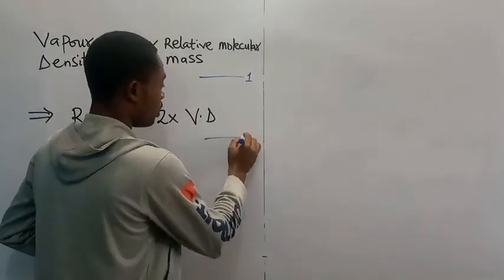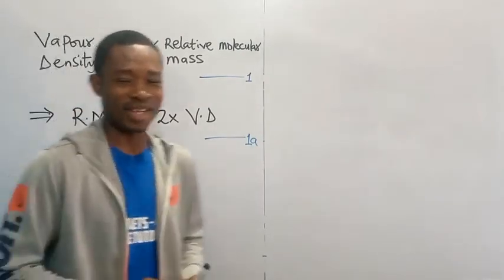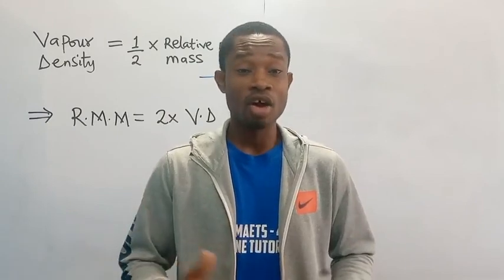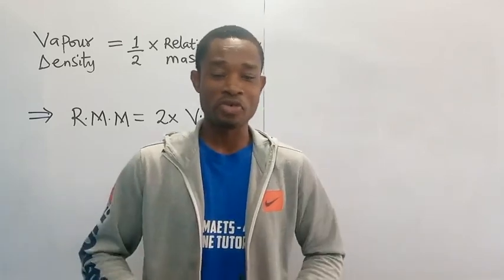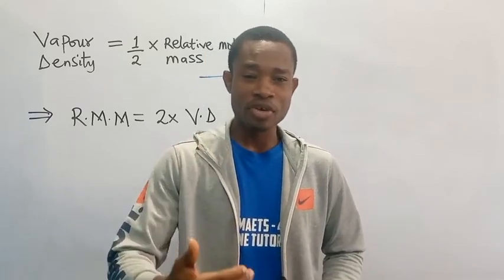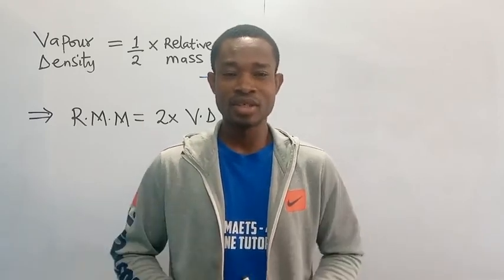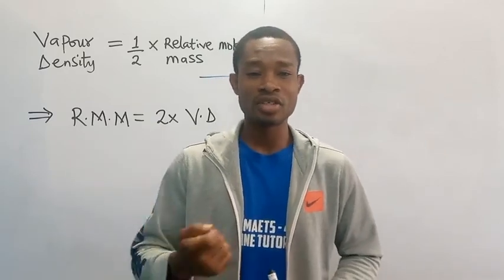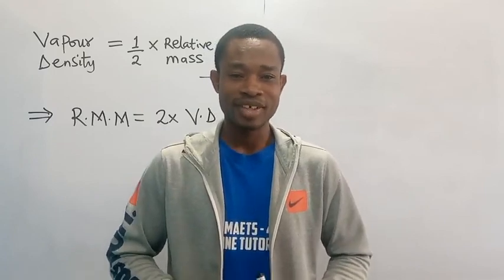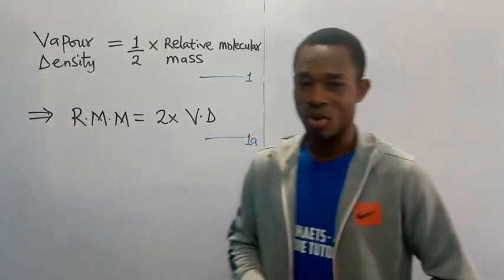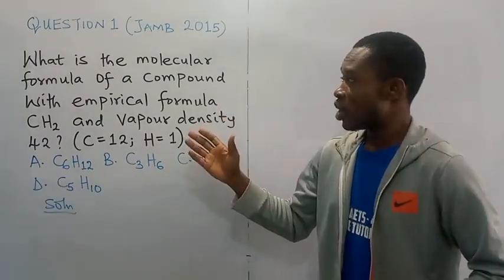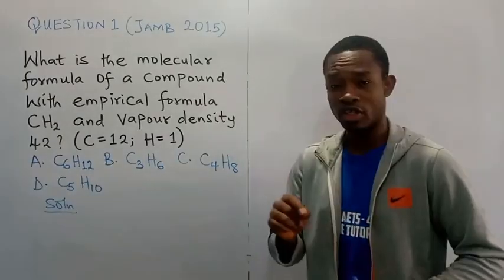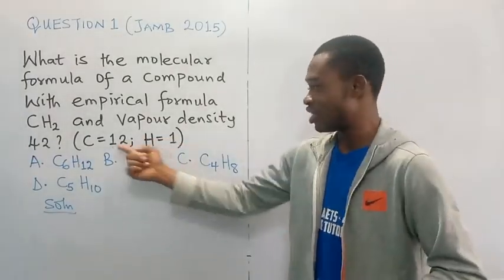Take note of this — label it equation 1a. Now you are ready to determine the molecular formula of a given substance, but you will need to know the empirical formula so that with that empirical formula and the relative molecular mass you can determine the molecular formula. Let us look at question number one: What is the molecular formula of a compound with empirical formula CH2 and vapor density 42? Carbon = 12, Hydrogen = 1.